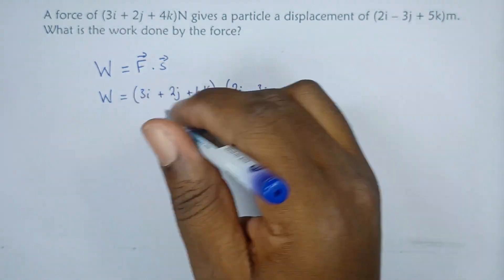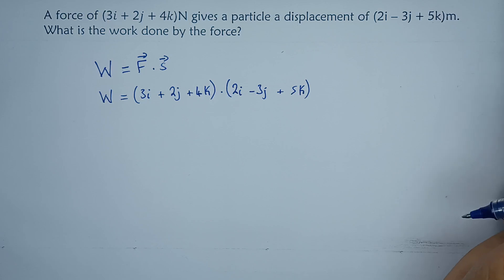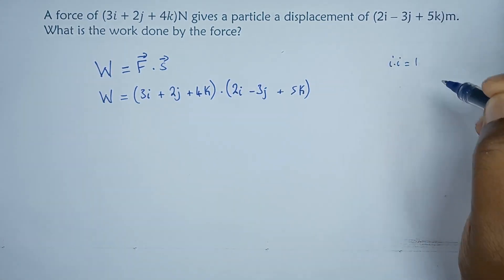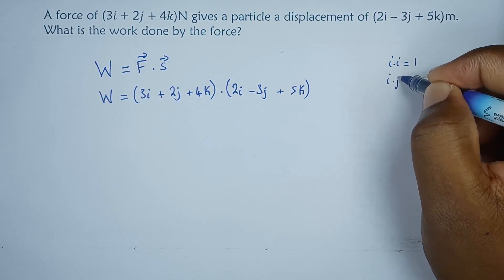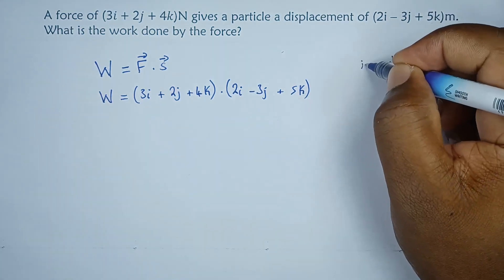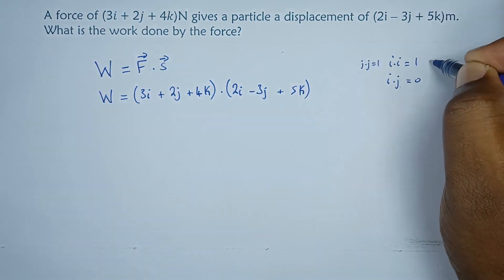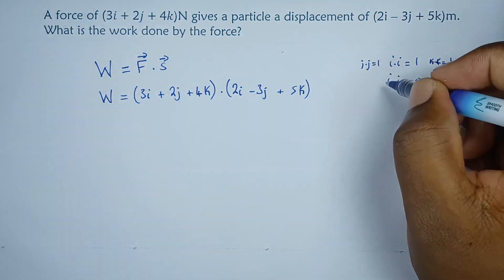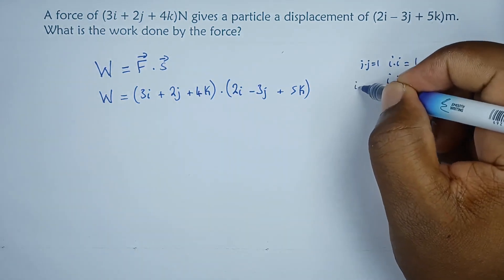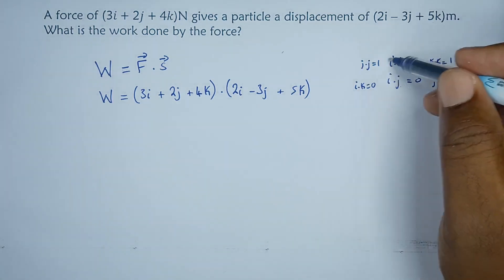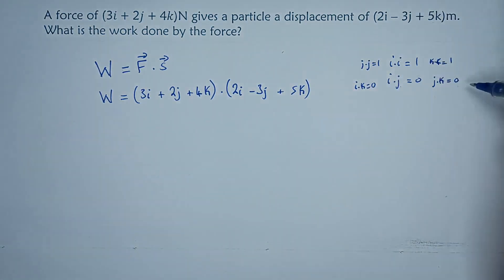Since these two are multiplying, it's a dot product. Now just a reminder, it's important to note that i times i gives us 1, i times j gives us 0, j times j gives us 1, k times k gives us 1. For the opposites, i and j is 0, i and k is 0, j and k is also 0. So as long as it's i·i, j·j, or k·k we get 1. As long as they're different, we get 0.